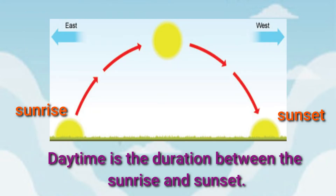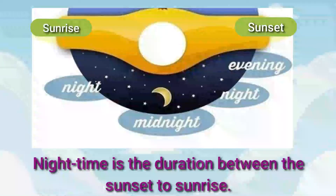What is daytime? It is the duration between sunrise and sunset. Nighttime is the duration between sunset and sunrise.